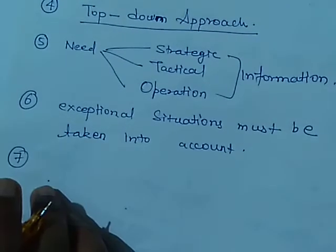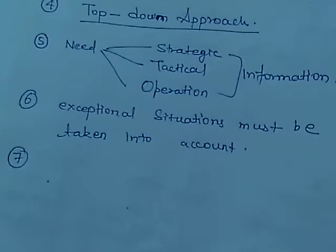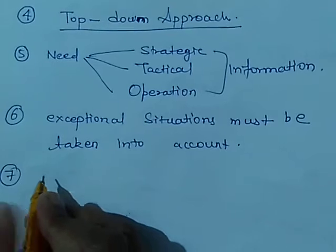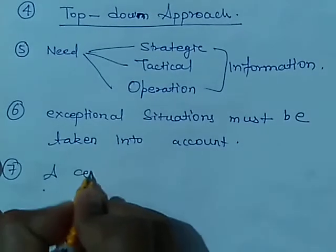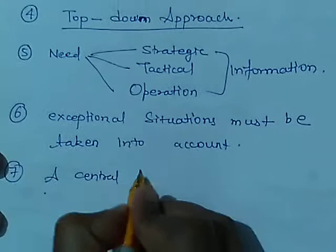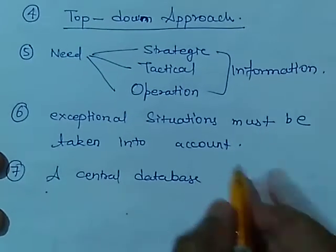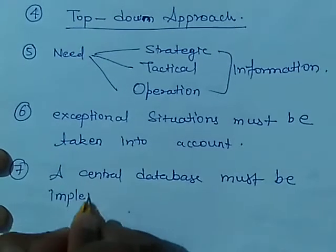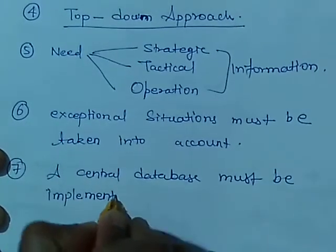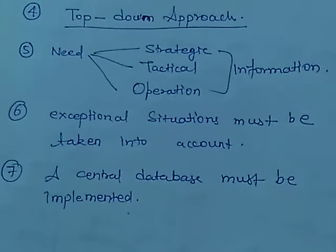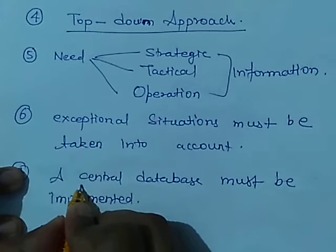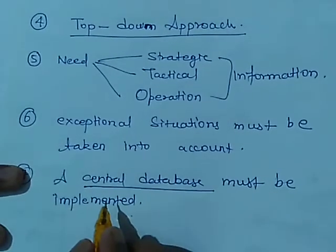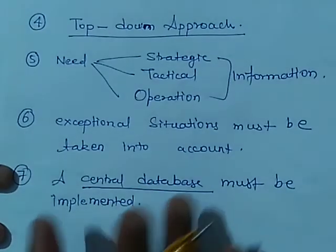The last characteristic is that a central database must be implemented, because information can be passed down after some time. A central database is the backbone of MIS and it should be implemented. These are the main characteristics of MIS.